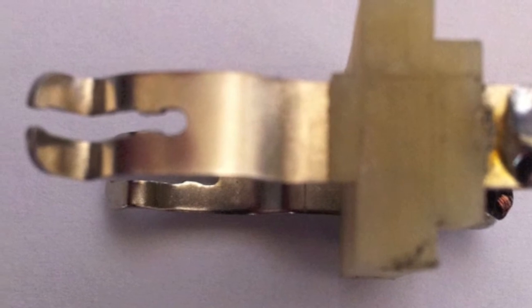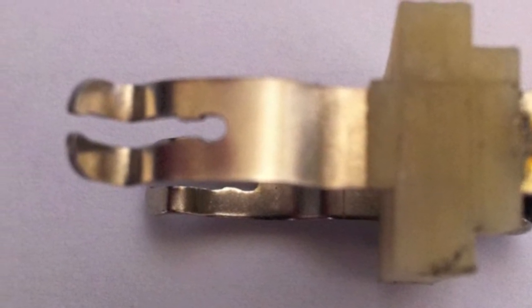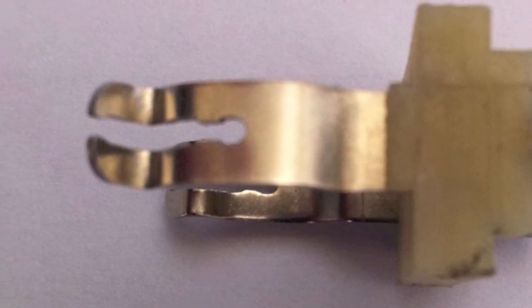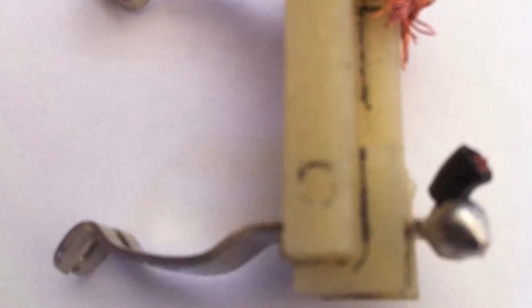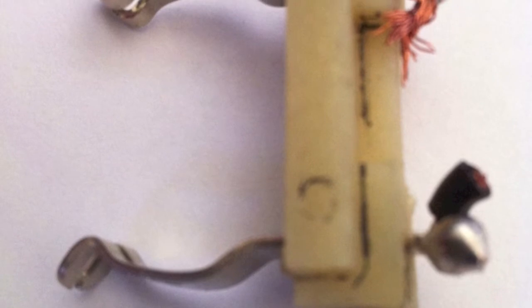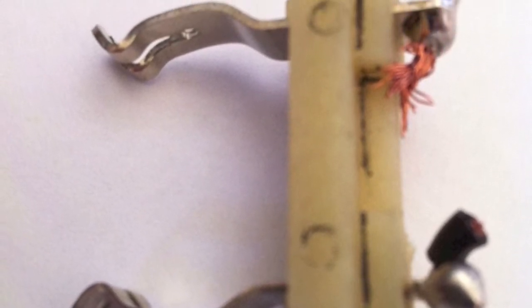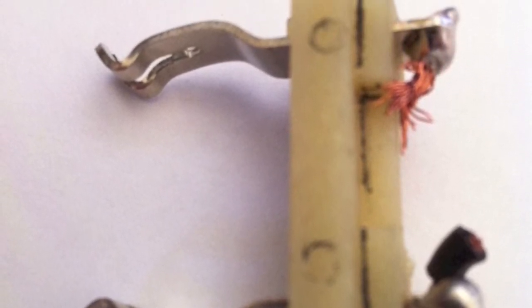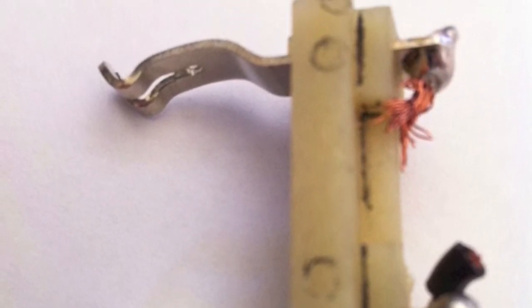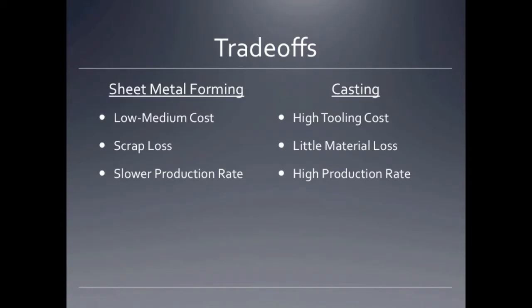The next step would include the necessary bend operations in order to obtain the final shape. An alternative process could have been casting, due to the intricate shape and fine surface finish of the part. Either process would be a viable option; however, the decision is largely based on the initial cost and production rate.